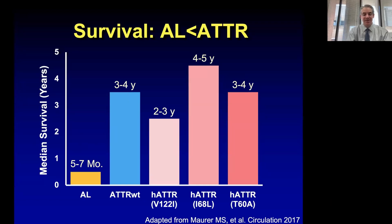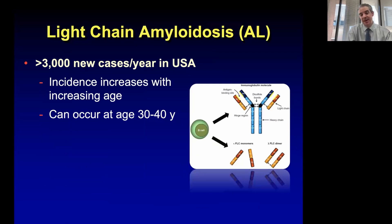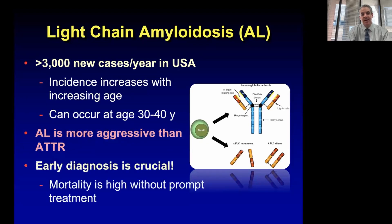AL amyloidosis is a diagnostic emergency. When you think about amyloidosis, we have to think about AL first because the disease is very aggressive. There are over 3,000 new cases a year, and although incidence goes up with age, I do have individuals with this disease in their 30s and 40s. AL is far more aggressive than ATTR, and early diagnosis is crucial.